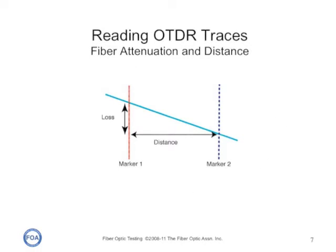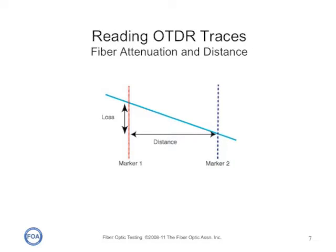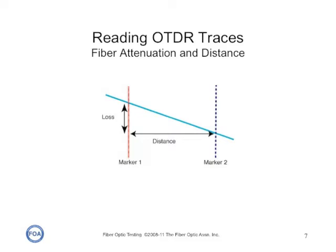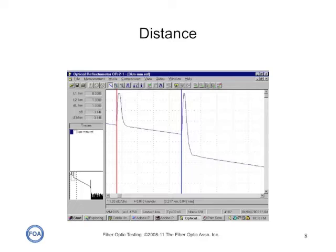Let's look at how we read an OTDR trace. Every OTDR trace has at least two markers that can be moved anywhere along the trace and are used as measurement points for our analysis. The distance between the markers is the distance from point A to point B where marker one and marker two are situated, and the vertical scale is the loss. If we're measuring distance, we place the markers at the same position at two events — preceding the event where there's a sharp transition up to the reflectance peak — and read the distance between the two markers as the length of that cable segment.